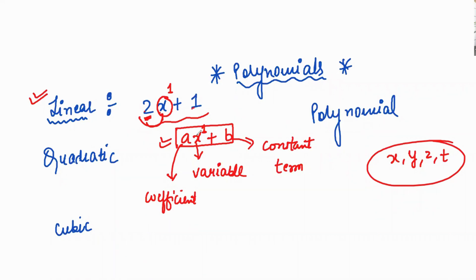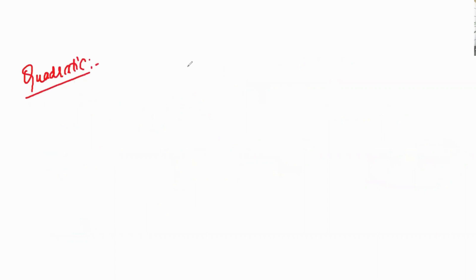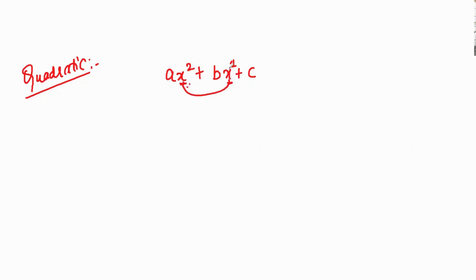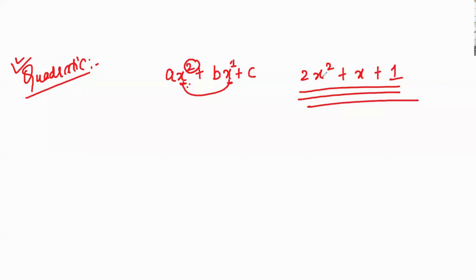Is that clear? Next, what is a quadratic equation? A quadratic equation is if you have been given an equation where the variable x appears with power 2 and also power 1. The highest power is 2. For example, 2x squared plus x plus 1 — this is known as a quadratic equation because the highest power is 2.